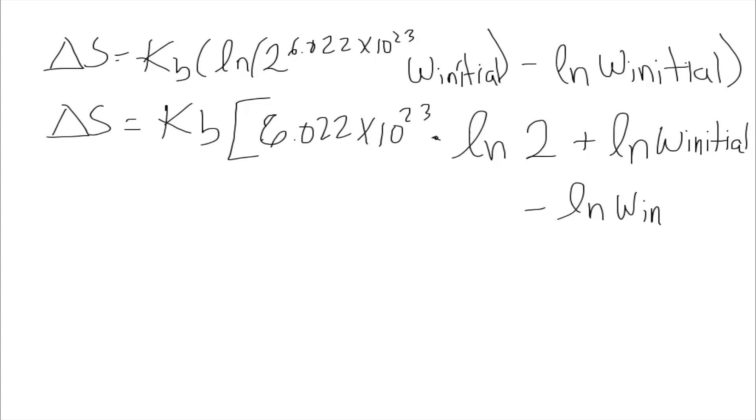When we consider this section right here, that's minus the natural logarithm of the W initial. So as you can see, as I said before, we can subtract both of this and eliminate them, so that's why I left it as the initial at the beginning. So this will go, and then we'll just have the delta S is kb times 6.022 times 10 to the 23rd times the natural logarithm of 2.